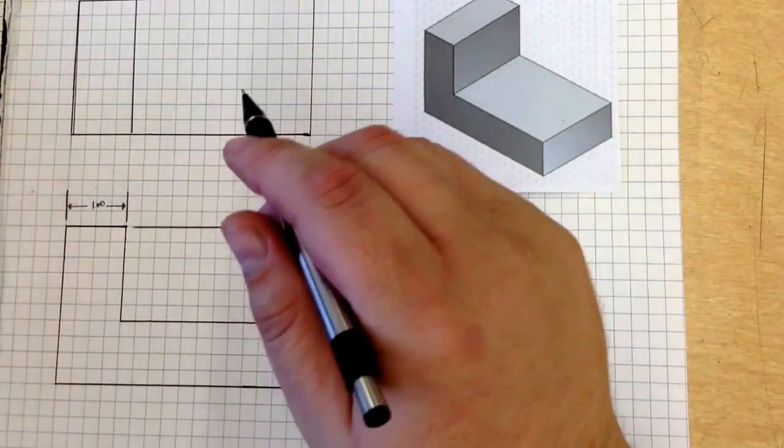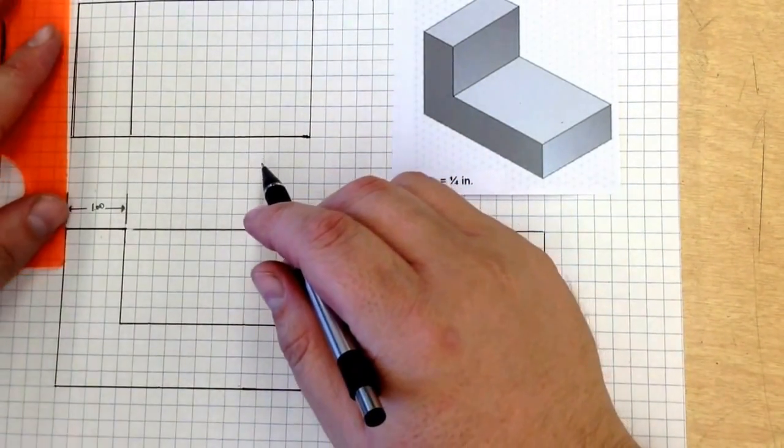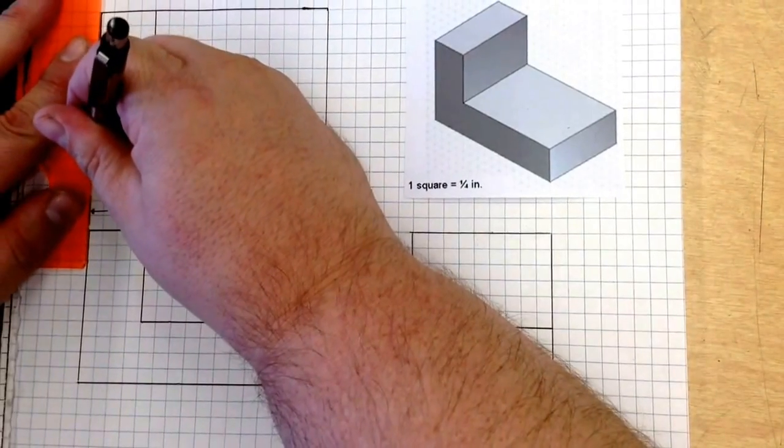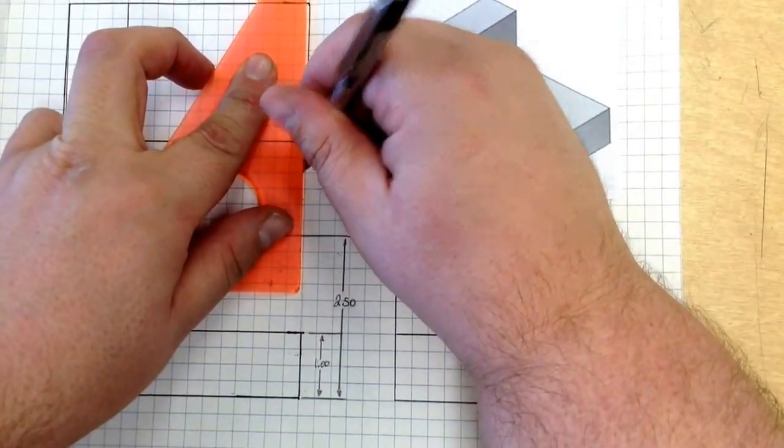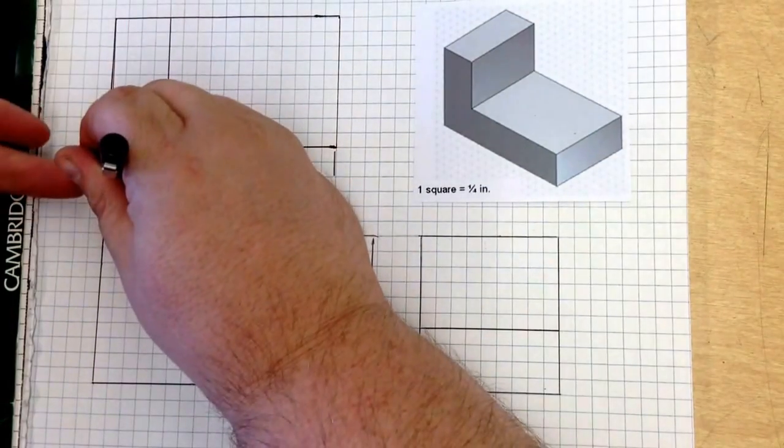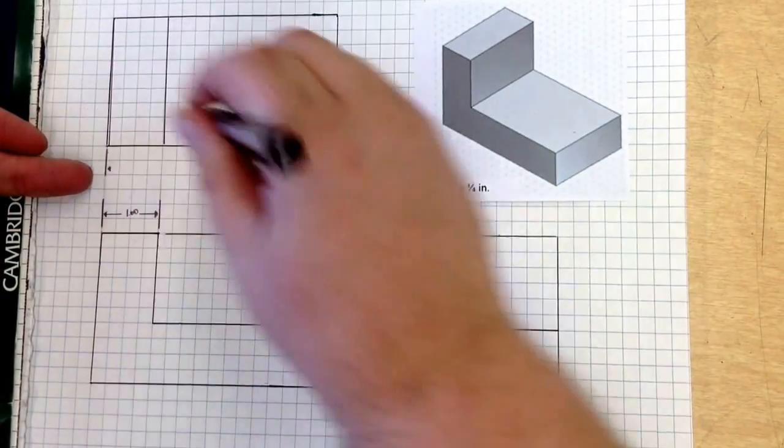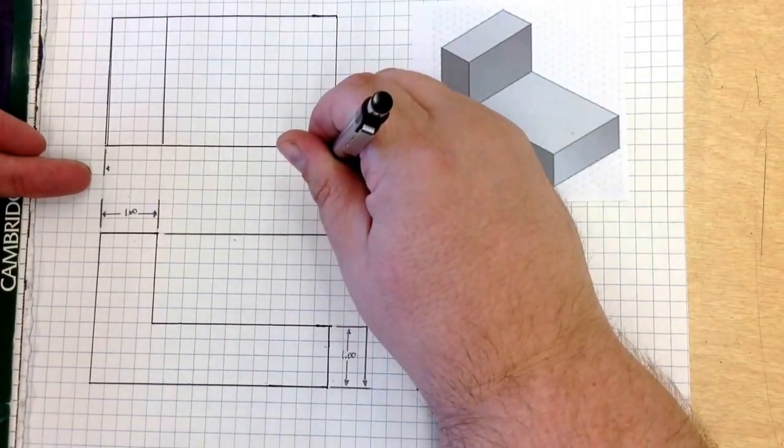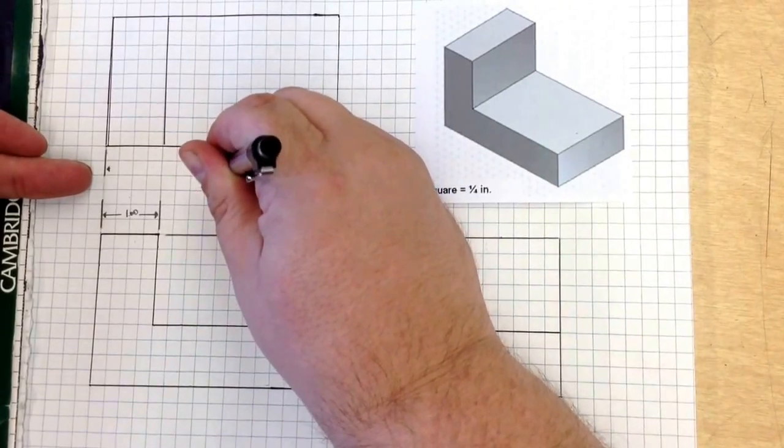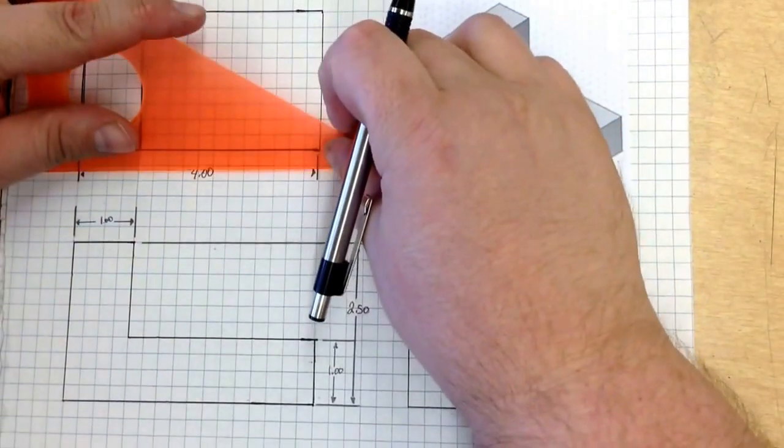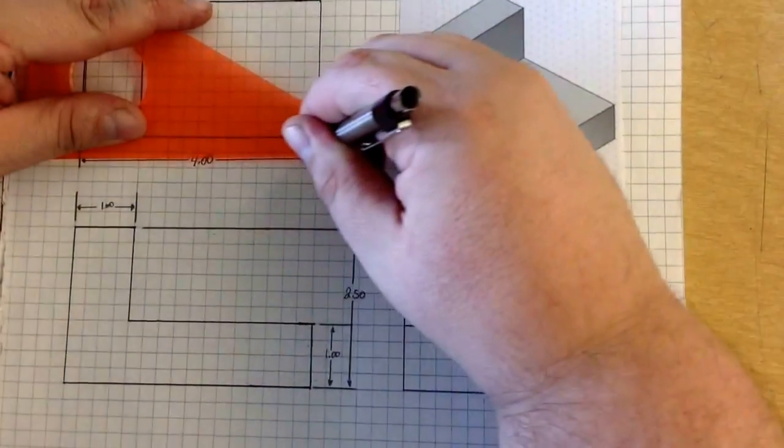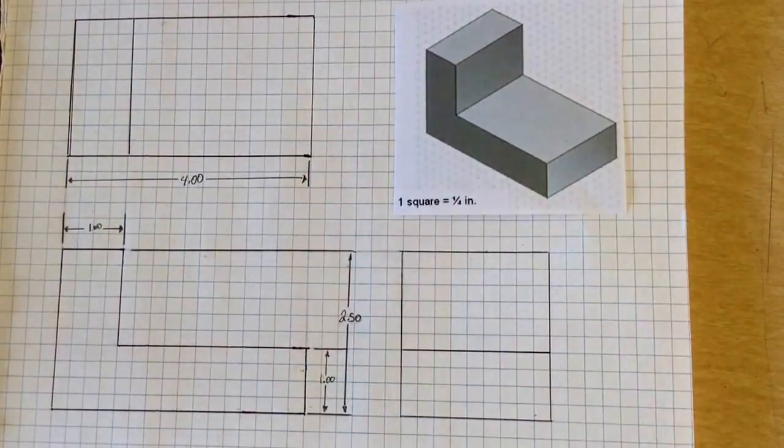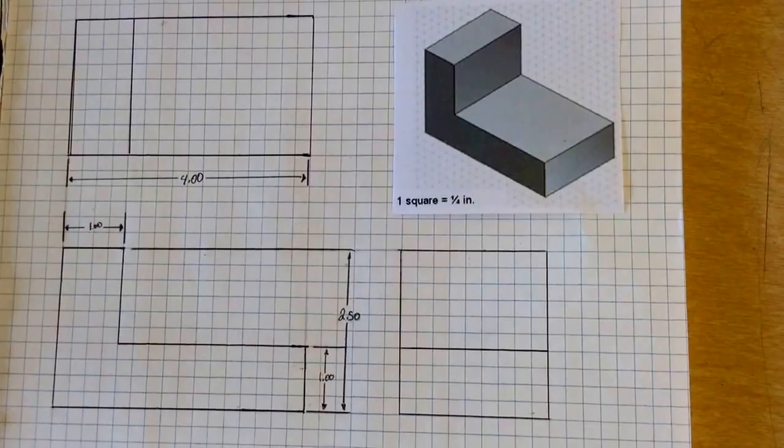Now we need an overall length. Now the overall length is really simple. Bring it down, bring it down, come up with our dimension arrows, and it is 4.00 inches long. We have our lines going across just like that.